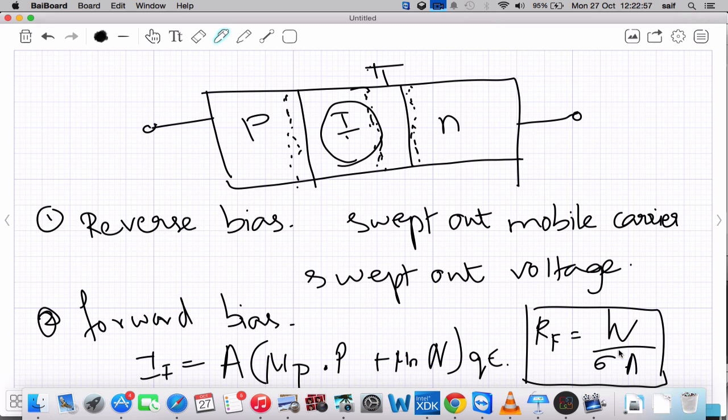So in this topic we have seen what is a PIN diode and how the PIN diode construction is there, and the theory about it in zero bias condition, in reverse bias condition, and in forward bias condition.